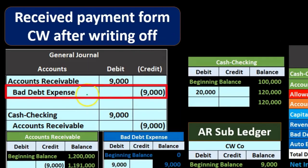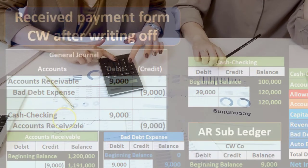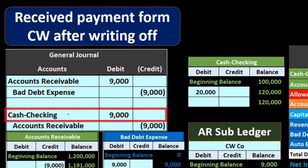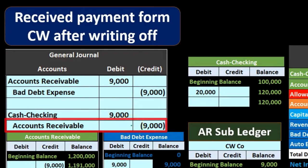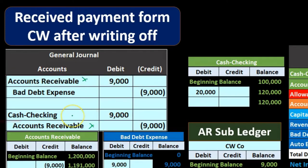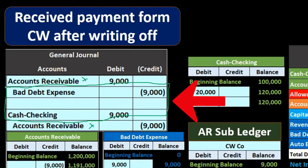Once reversed, we record the normal transaction: debit checking account (increase cash) and credit accounts receivable (decrease receivable). Note that accounts receivable is debited and credited between the two journal entries — they cancel out, leaving just a debit to checking and a credit to bad debt. Technically we could combine this into one entry, but we don't because the two-step process provides a better paper trail showing both that we gave up on the customer and that they later paid us.